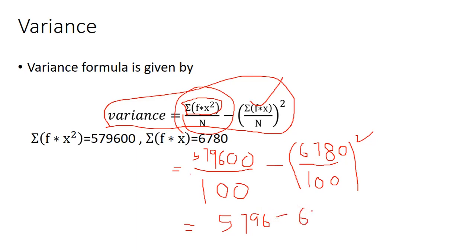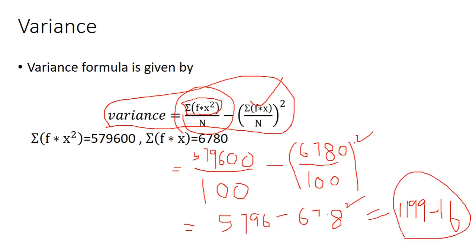67.8 squared — that gives us 5796 minus 67.8 squared, which equals 1119.16. So this is the variance for the given data.